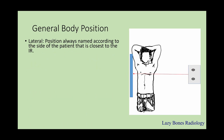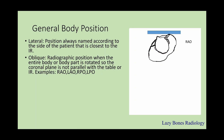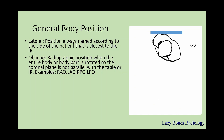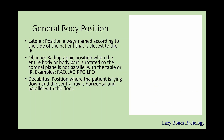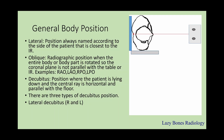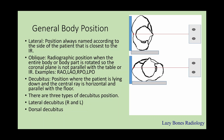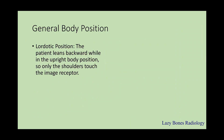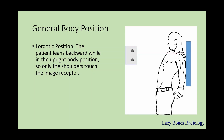Next is a lateral position: always named according to the side that's closest to the IR. Oblique position is a radiographic position when the entire body or body part is rotated so the coronal plane is not parallel with the table or IR. For example, RAO, LAO — right anterior oblique or left anterior oblique. Next is RPO, right posterior oblique, and LPO, left posterior oblique. Decubitus is a position where the patient is lying down and the central ray is horizontal and parallel with the floor. There are three types: lateral decubitus both right and left, dorsal decubitus, and ventral decubitus. Lordotic position: this is where a patient leans backwards while in the upright position so only the shoulders touch the image receptor.